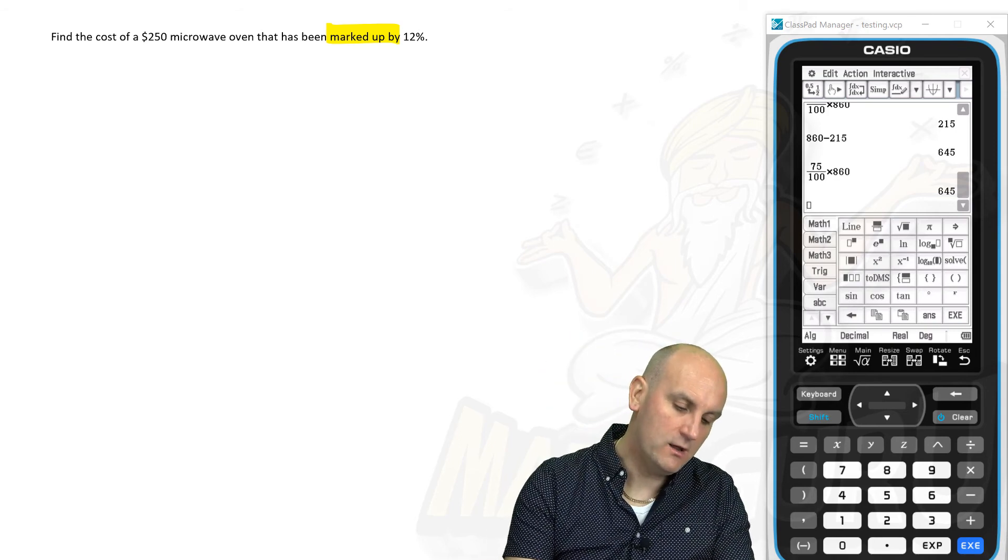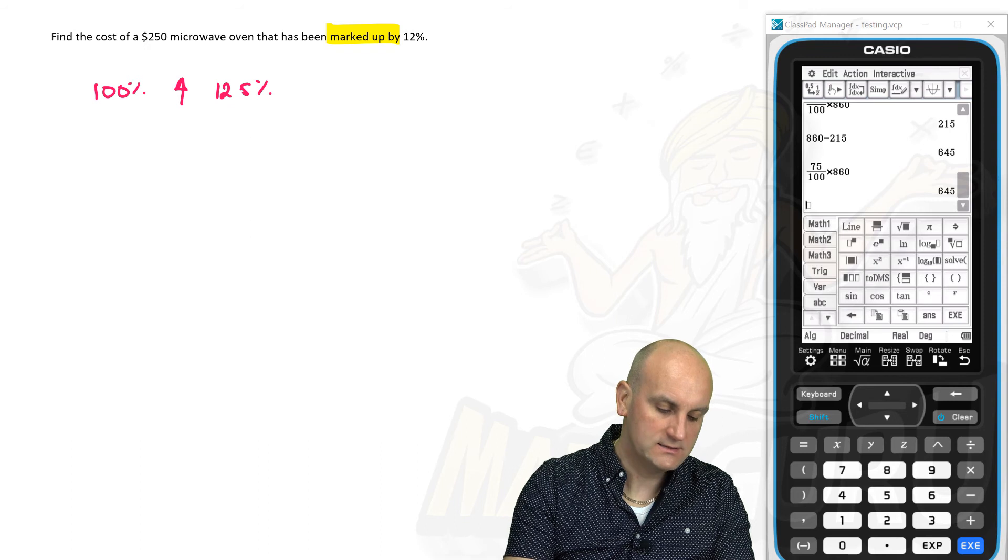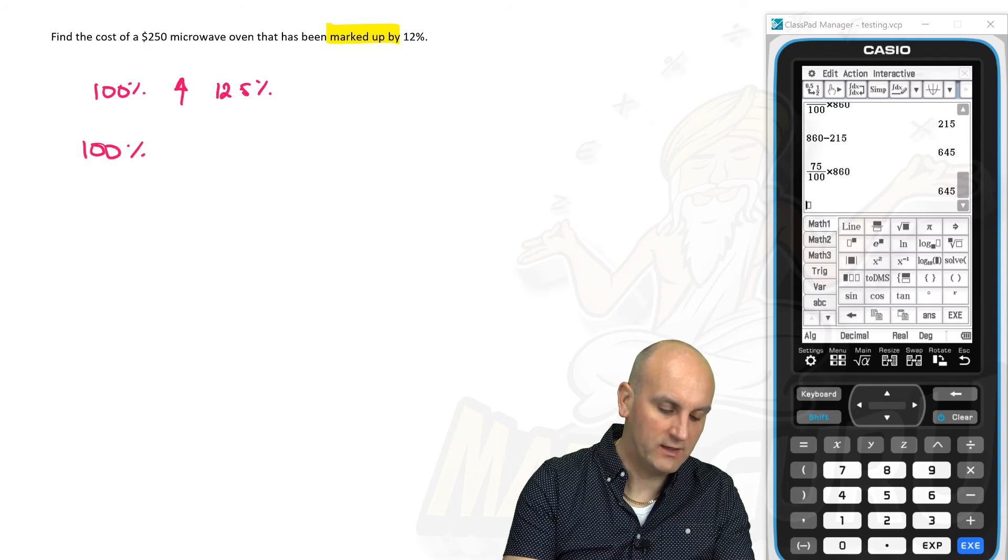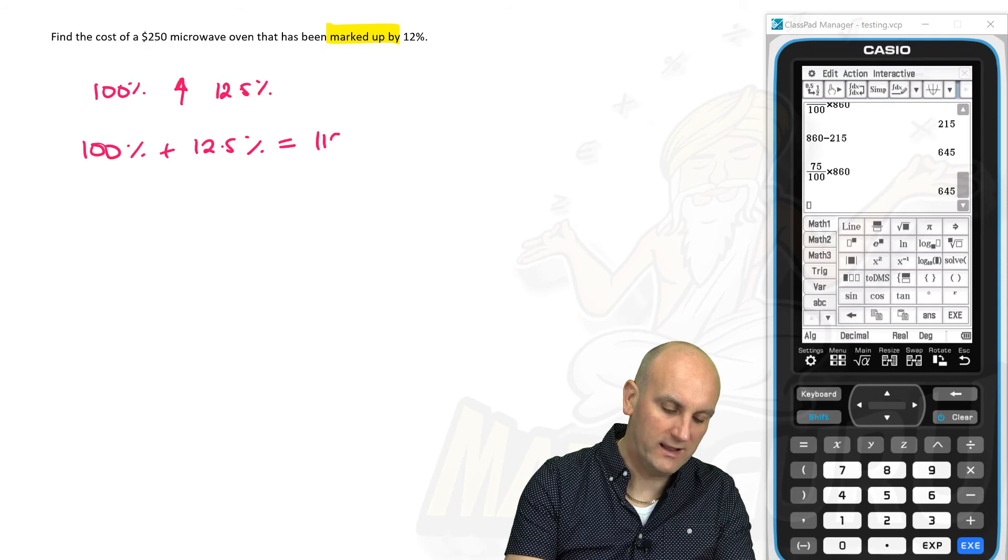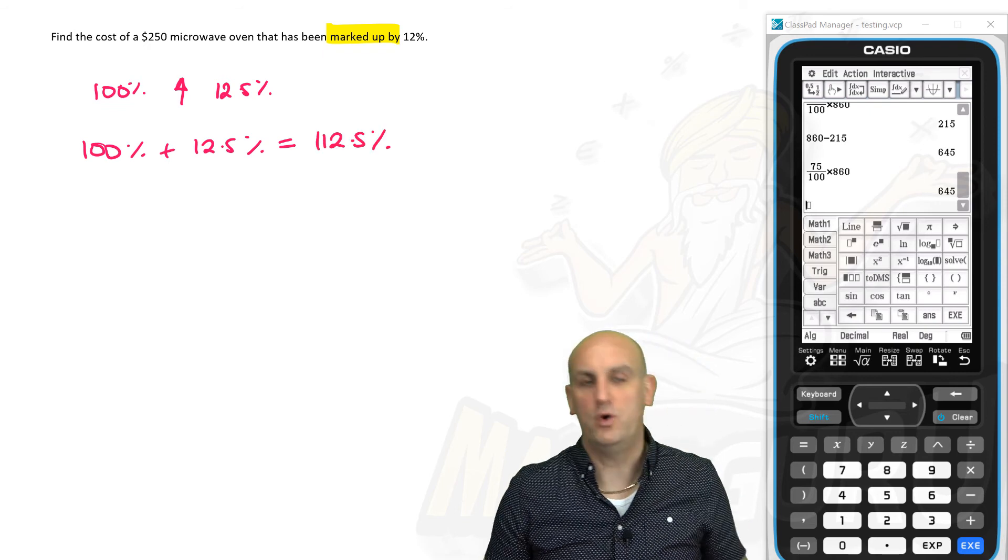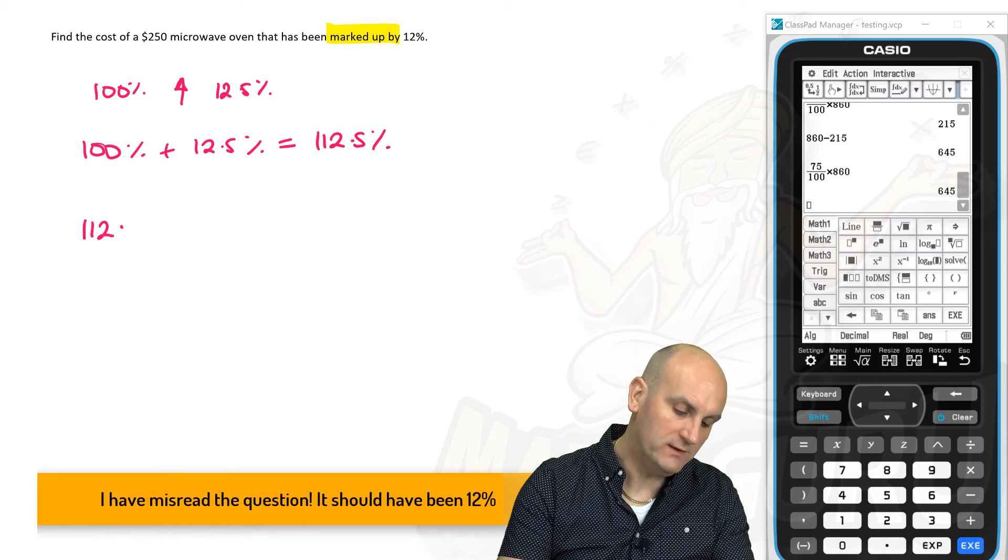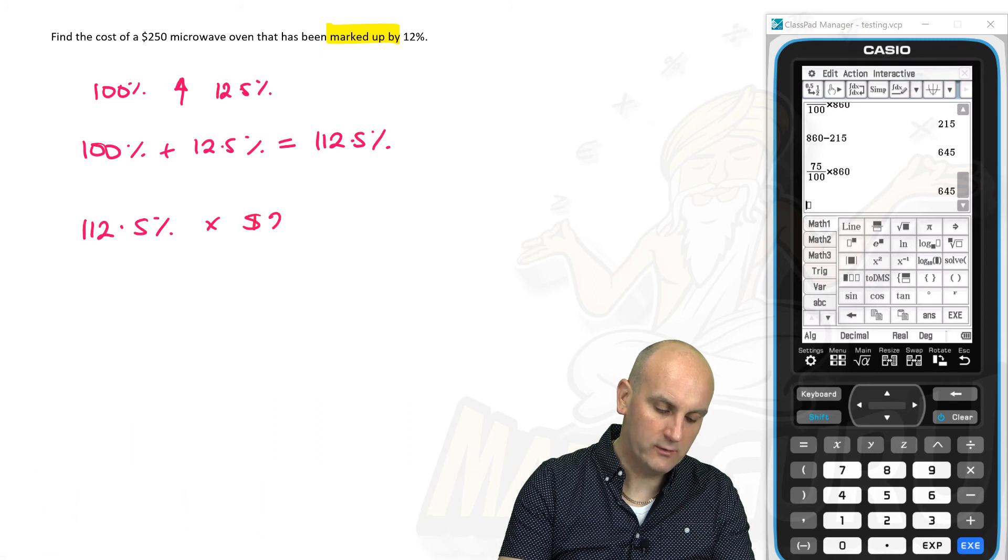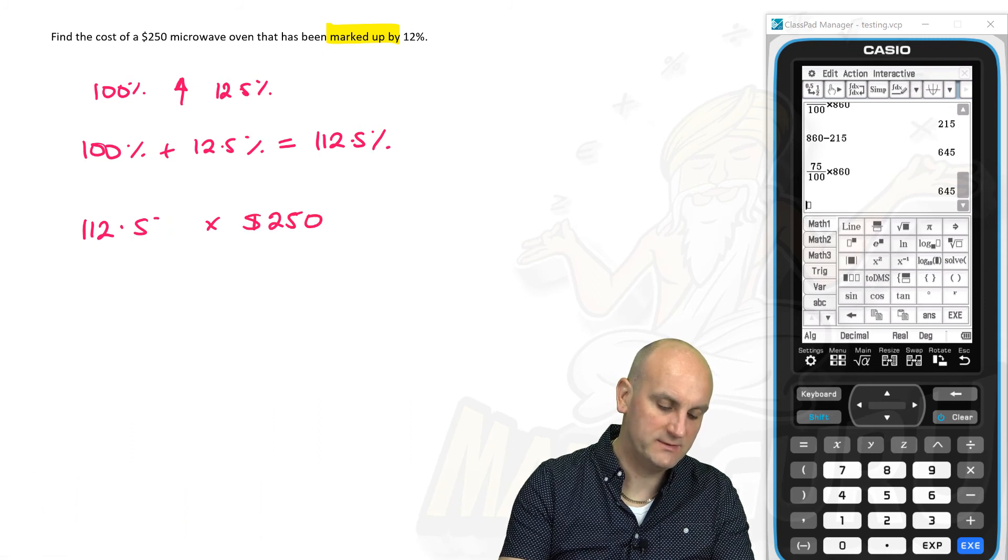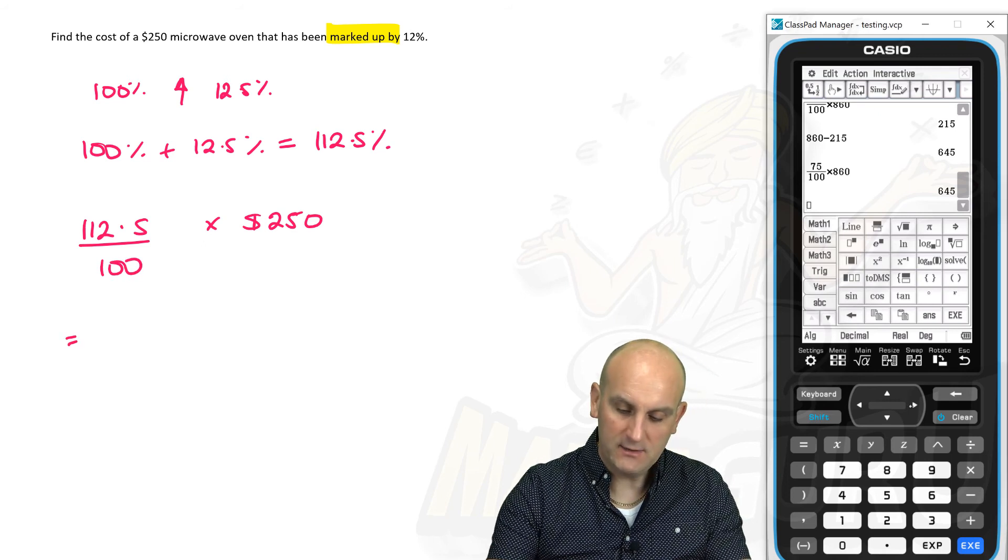But basically, I know that I'm starting with 100%. It's being marked up by 12.5%. And so that means at the end, I'm going to have 100 plus 12.5, which gives me 112.5% of what I started with. Hold on a moment, 112.5% of what I started with, $250. Well, I don't need to write the percent there. I'm just going to write divide by 100.